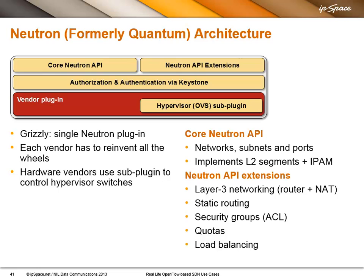Unfortunately, we have a slight problem here. The current Neutron architecture, at least in the Grizzly release — Havana is way better — in Grizzly there was a hack where you could get multiple plugins to work. But most Grizzly deployments would use a single Neutron plugin, which means you would usually use the vendor plugin, and then the vendor has to reinvent all the hardware and software wheels and control their switches as well as the hypervisor. Most vendors would use OpenVSwitch in the hypervisor and an OpenVSwitch sub-plugin within their plugin to control the soft switches. Usually this would be done using VLANs, which is good enough to implement the core Neutron functionality — Layer 2 segments and ports.